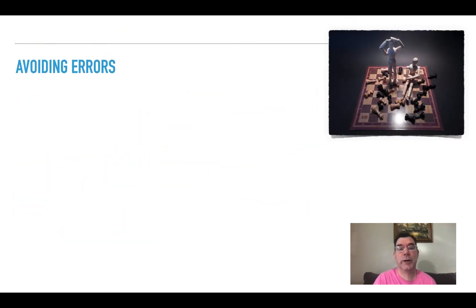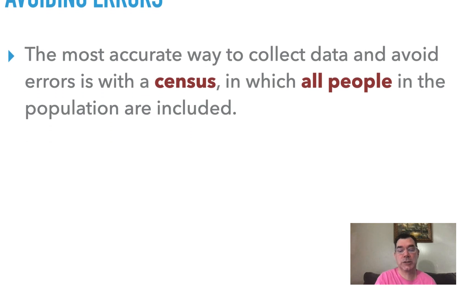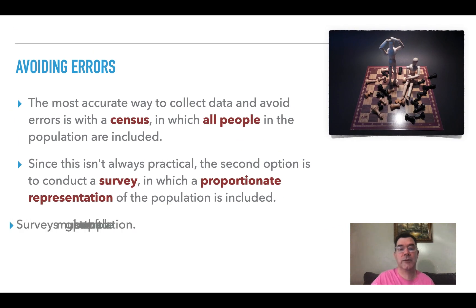So here's how we avoid those errors. The obvious way is just to ask everybody — have everybody in the population take that survey. We call that a census, and that's where everybody is asked the same series of questions. Well, that's not always practical. So you have to conduct a survey, but you have to make sure that it is a proportionate representation of the population. You'd have to look at all types of people in the population and make sure that each type of person, regardless of several different factors about those people, is a proportionate representation of the population.